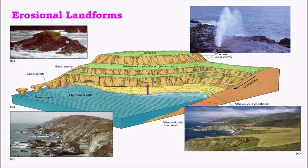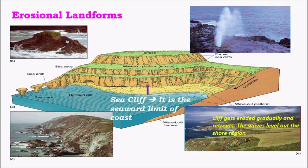The major erosional marine landforms are sea cliffs, wave-cut terraces, blowholes, sea arches, sea caves, sea stacks, and terrace-type landforms.